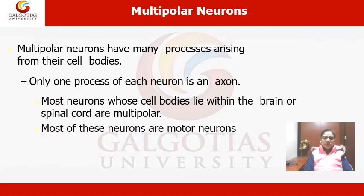The third type is multipolar neurons. Multipolar neurons have many processes arising from their cell body, but only one process of each neuron is an axon. Most neurons whose cell bodies lie within the brain or spinal cord are multipolar, and most of these neurons are motor neurons.